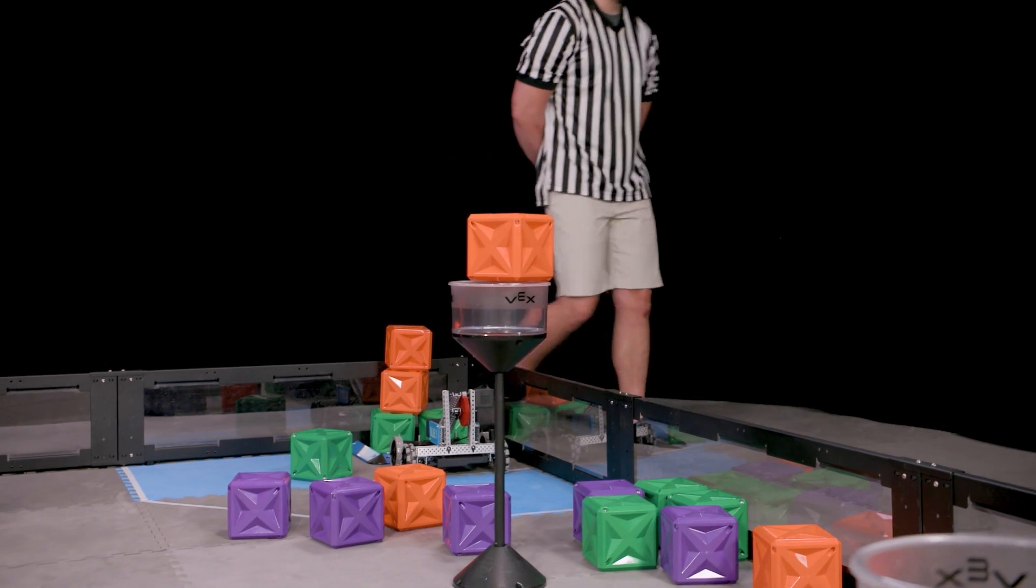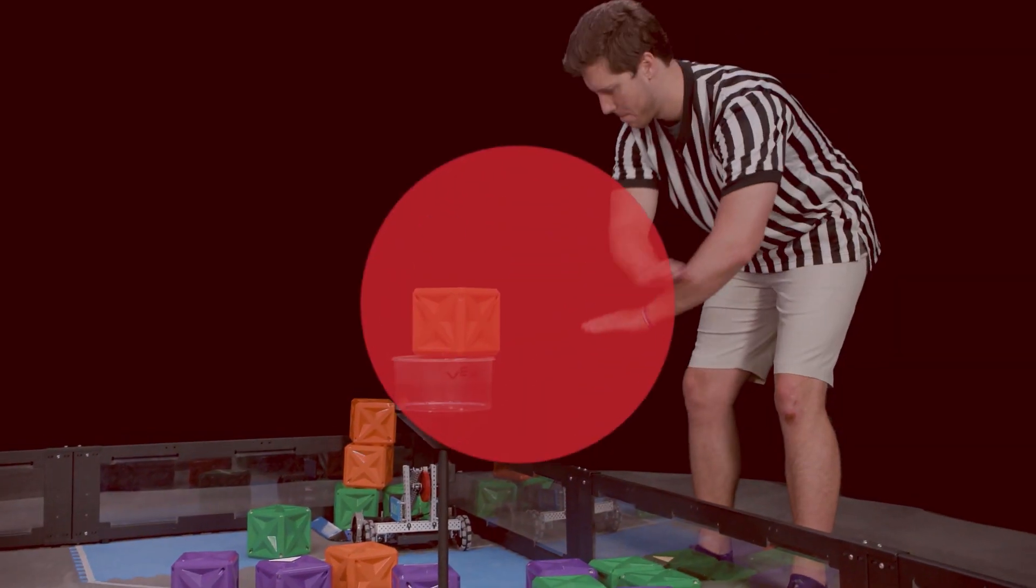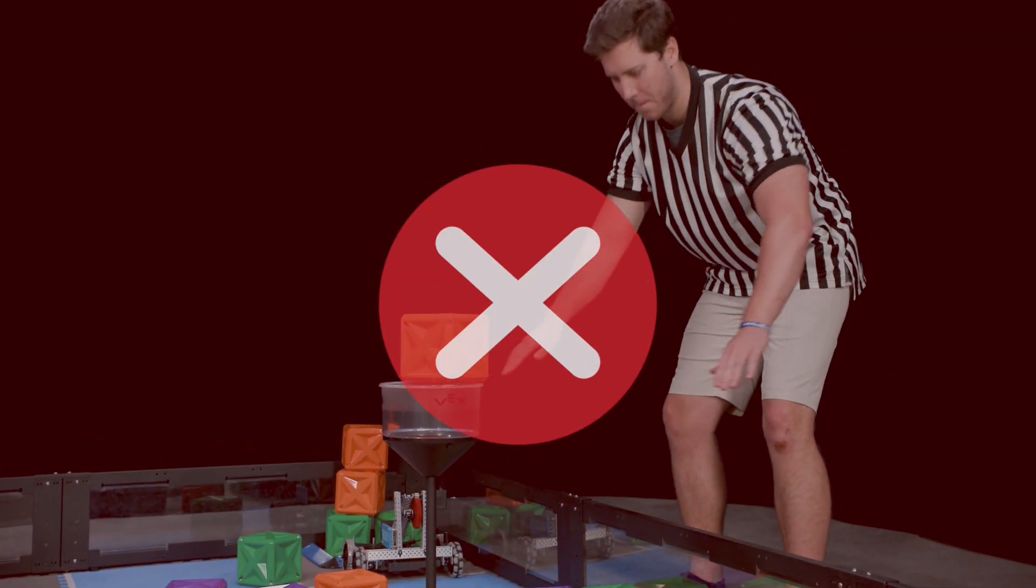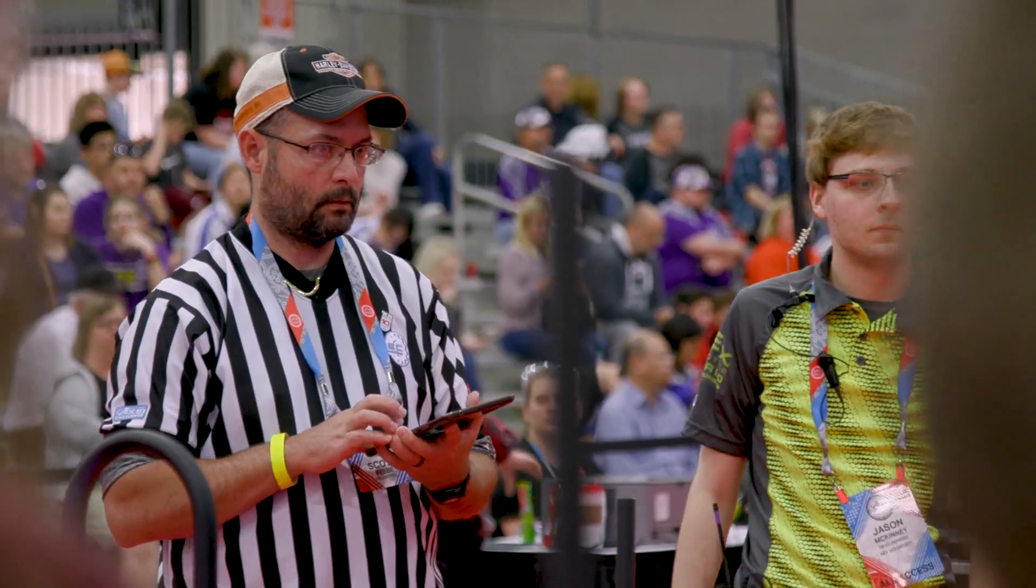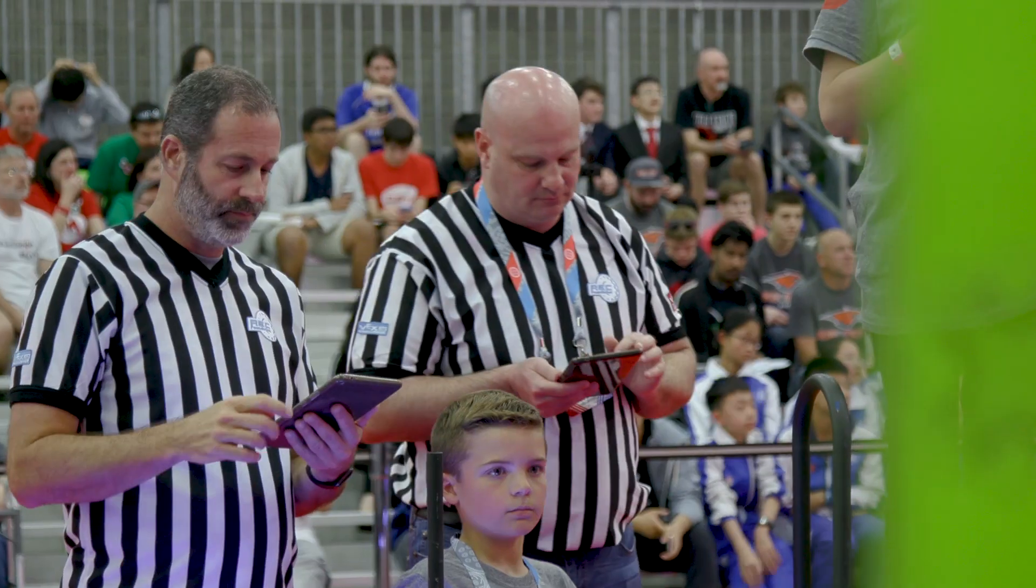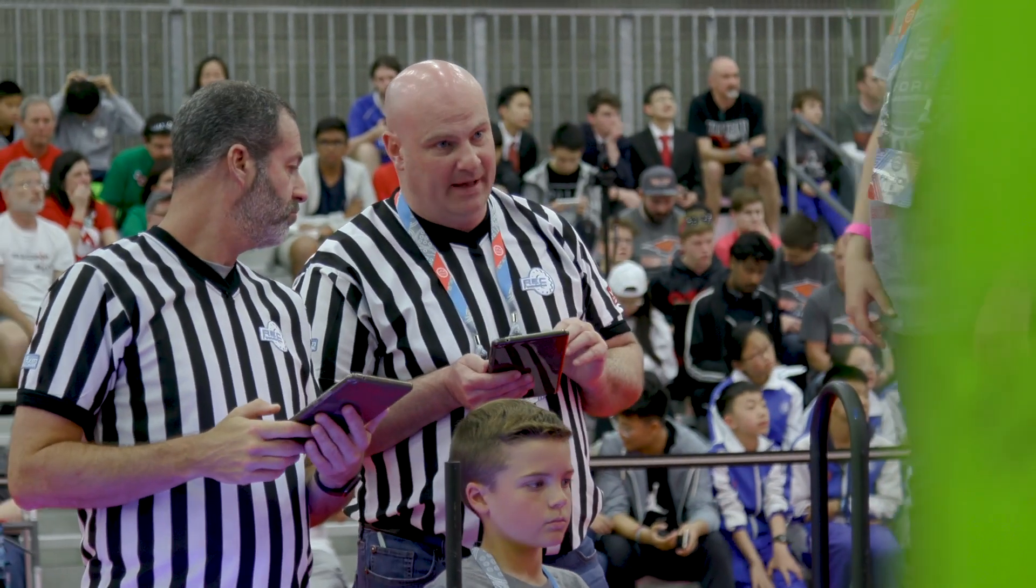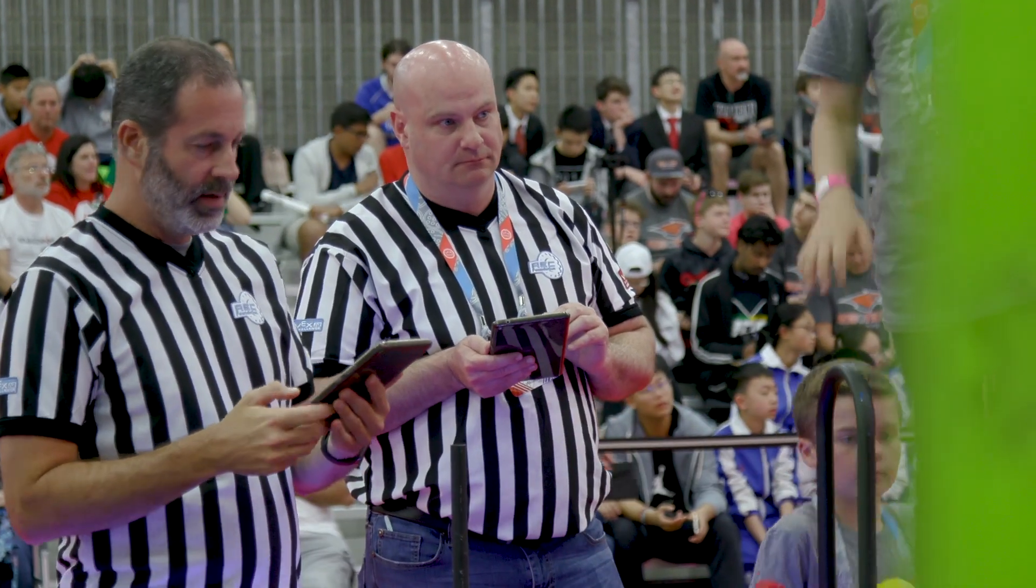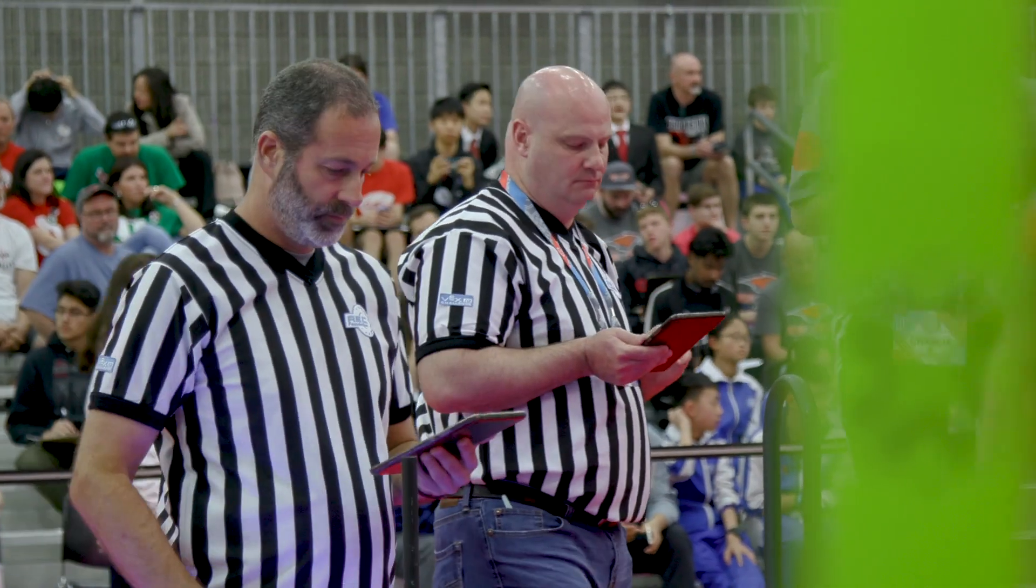Again, any part of the cube must be below the placing line to be considered placed. Just because a cube is inside of or resting on top of a tower does not ensure that it should count as placed. Any questionably placed cubes should be verified by the head referee at the end of the match before the field is reset. They should announce their decision clearly and visibly to all teams and spectators.